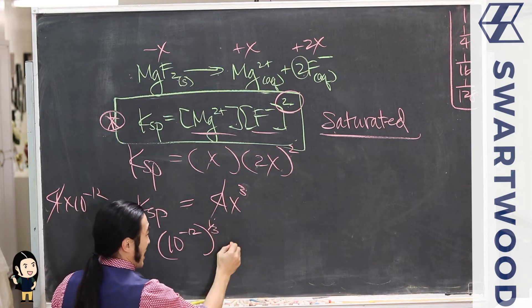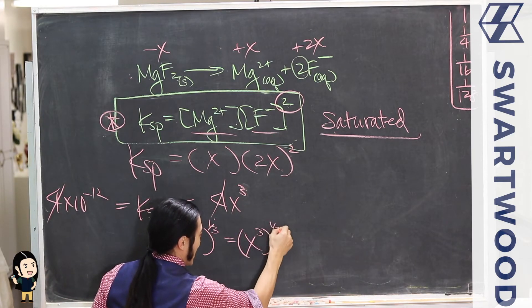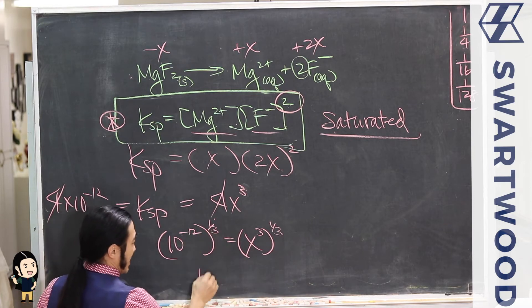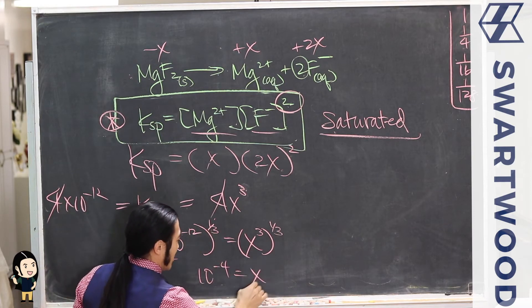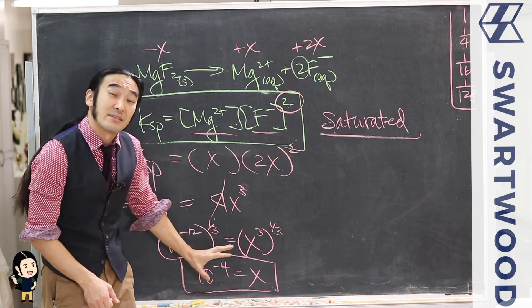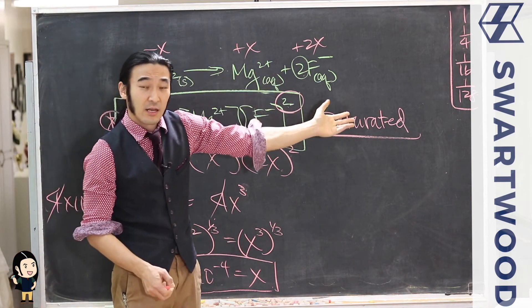That's going to be 10⁻¹². Cube rooting—taking to the third power times this guy to the third power—on the left-hand side you get 10⁻⁴. And this is the amount that needs to dissolve for us to be saturated, so that is technically the solubility.